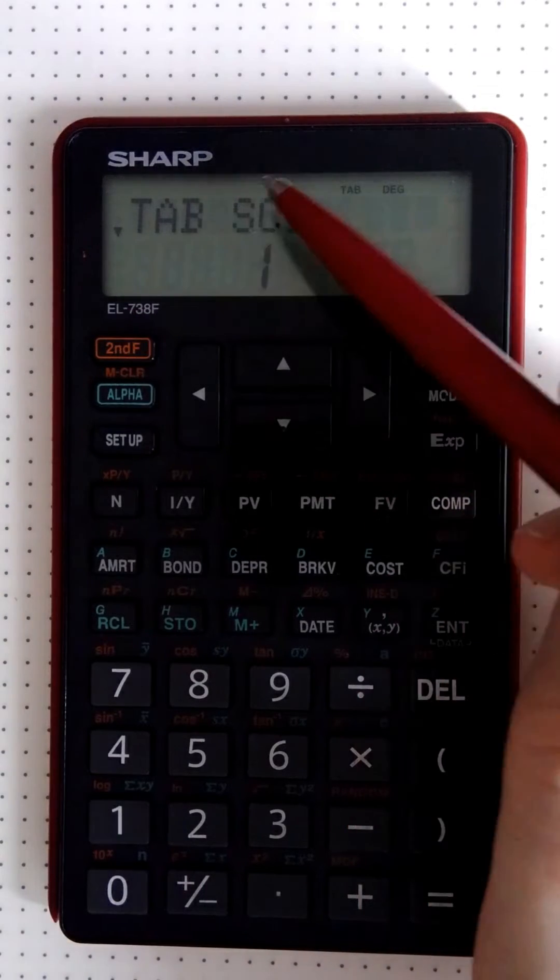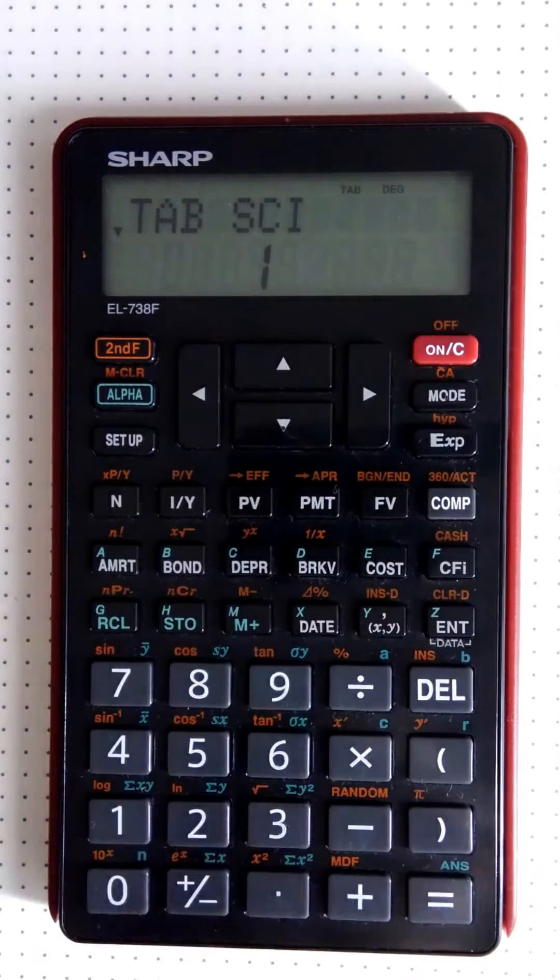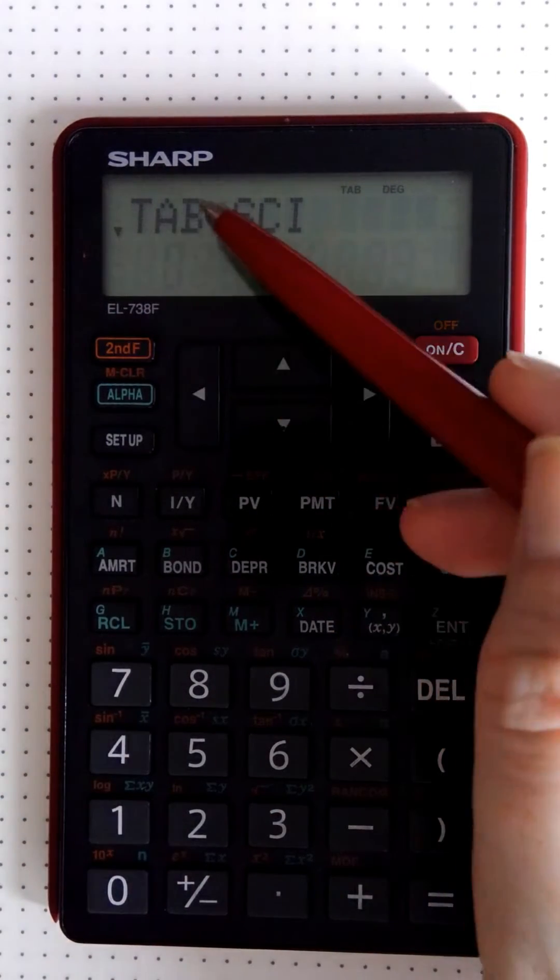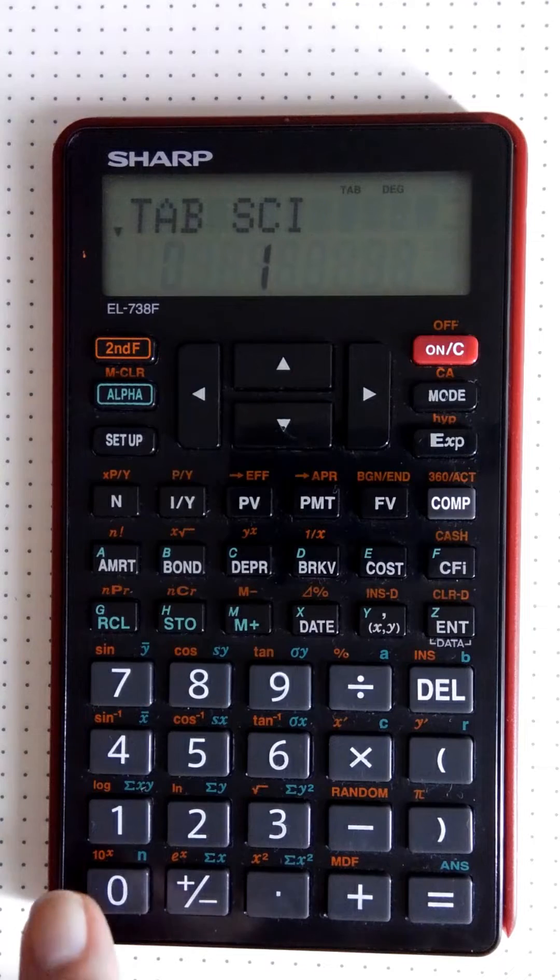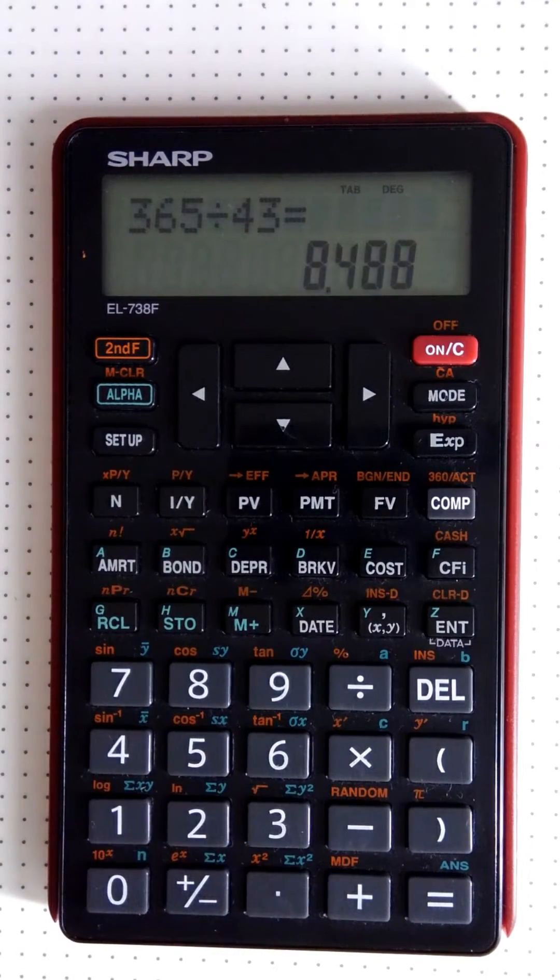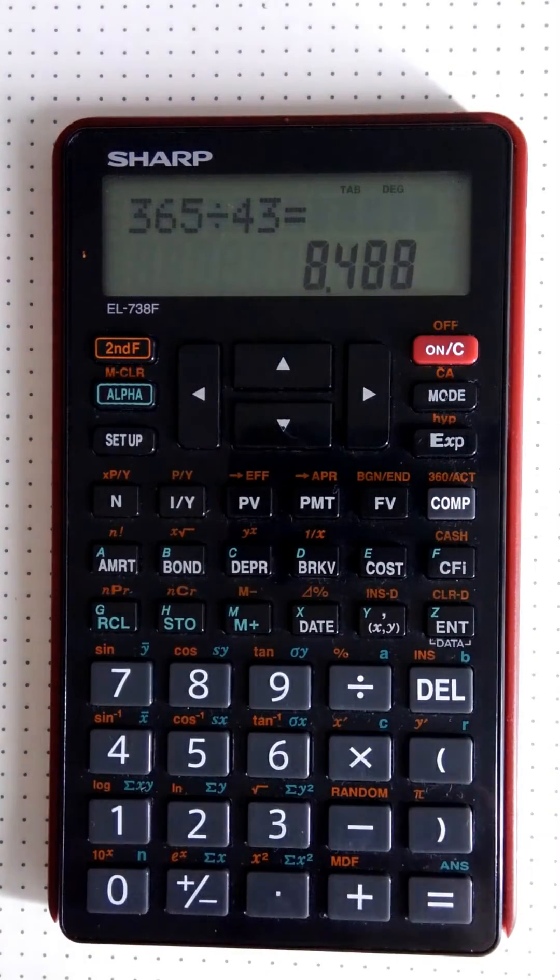Now you'll see it says tab and psi. Psi is your scientific notation, like times 10 to the power kind of situation. Tab is what we're interested in, so we're going to say okay, zero, and let's change it to three decimal places just for an example. Now you see it's 8.488.